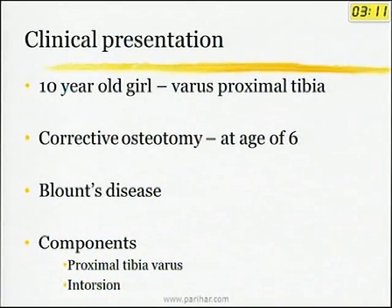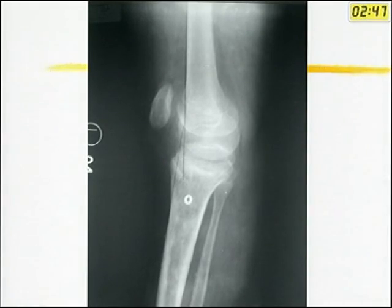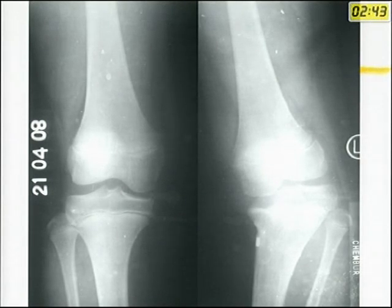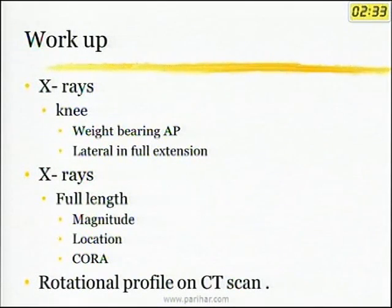In clinical practice, consider this girl who had Blount's disease and had had an osteotomy at age 6, but had mainly proximal tibial varus, a certain element of rotation — almost 30 degrees of rotation — and some amount of hyperextension at the knee. All X-rays were taken to quantify the deformity, including full-length X-rays, and the rotational profile was calculated on a CT scan.